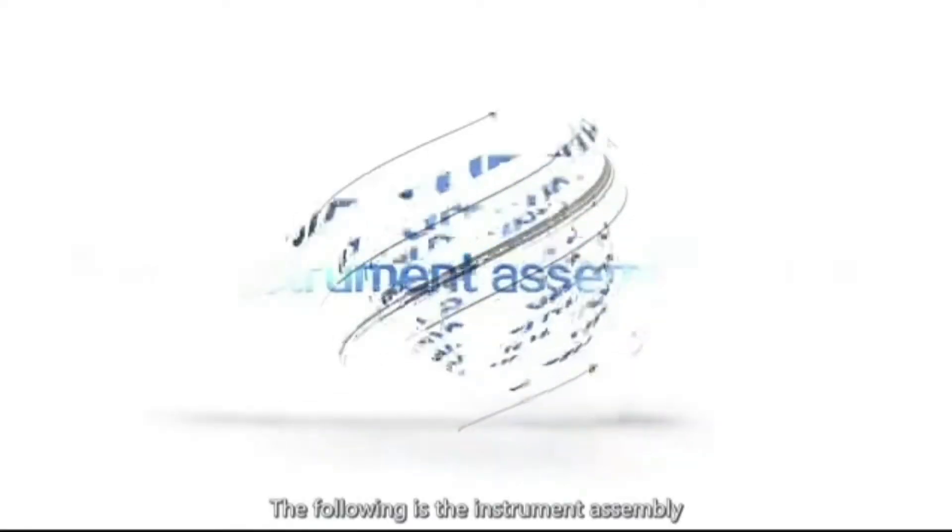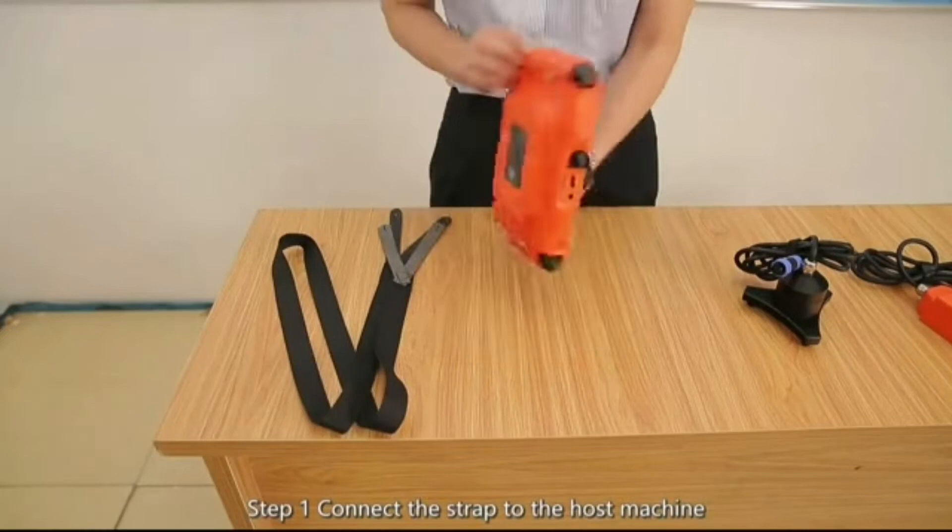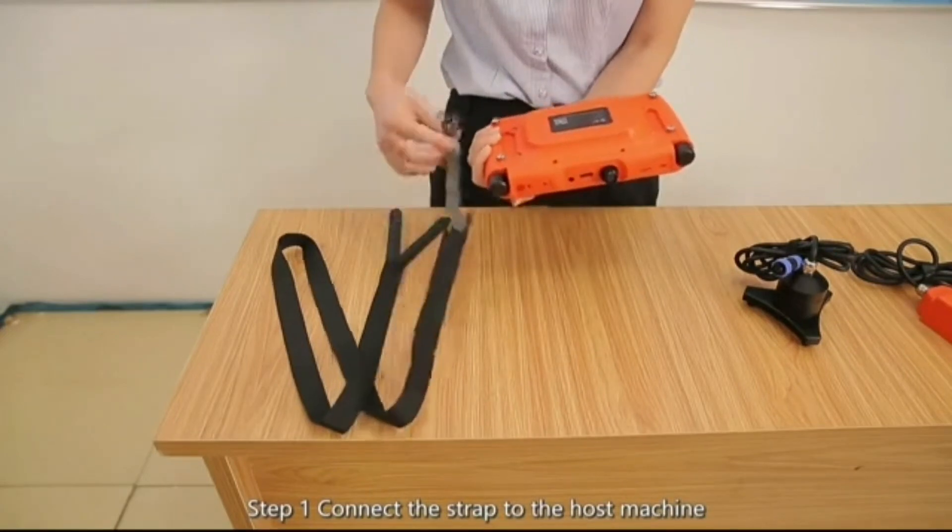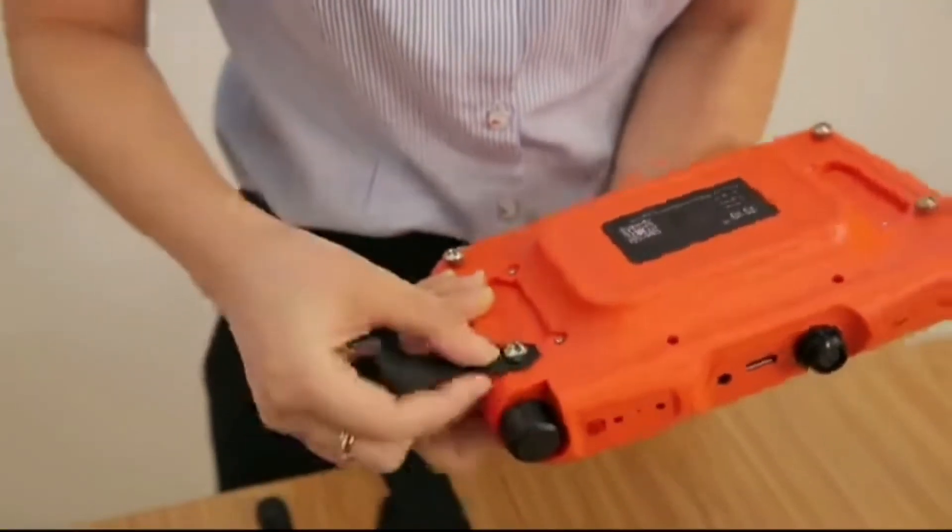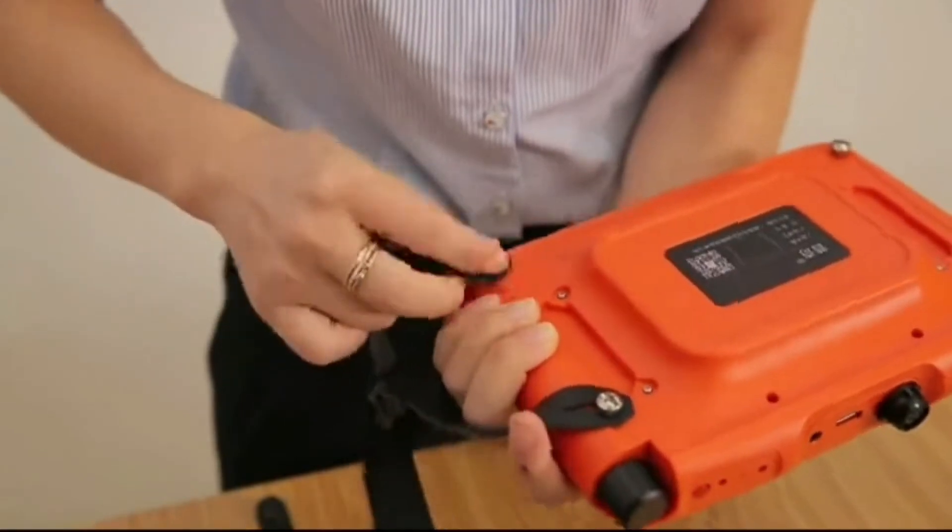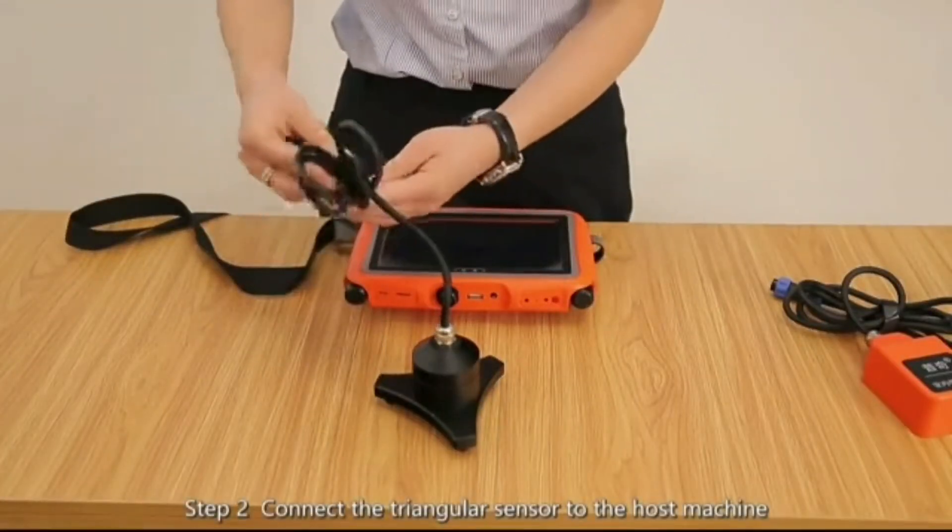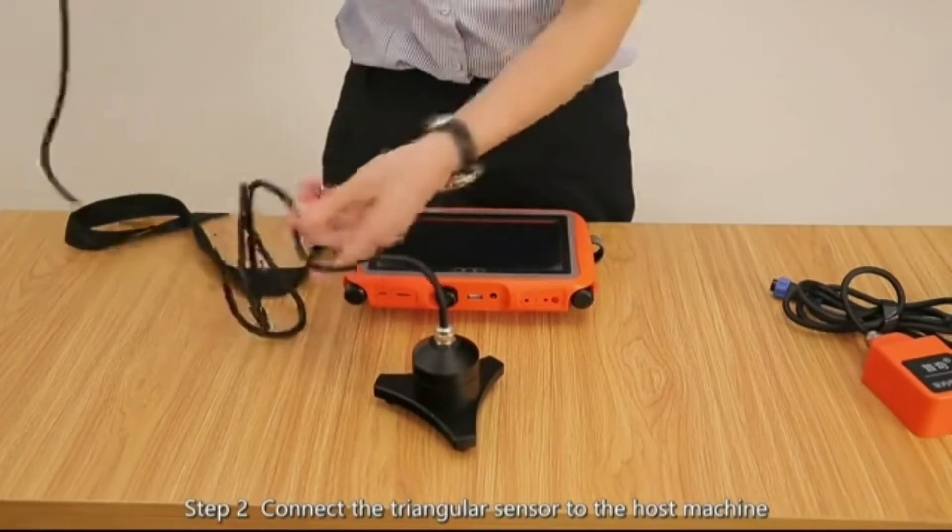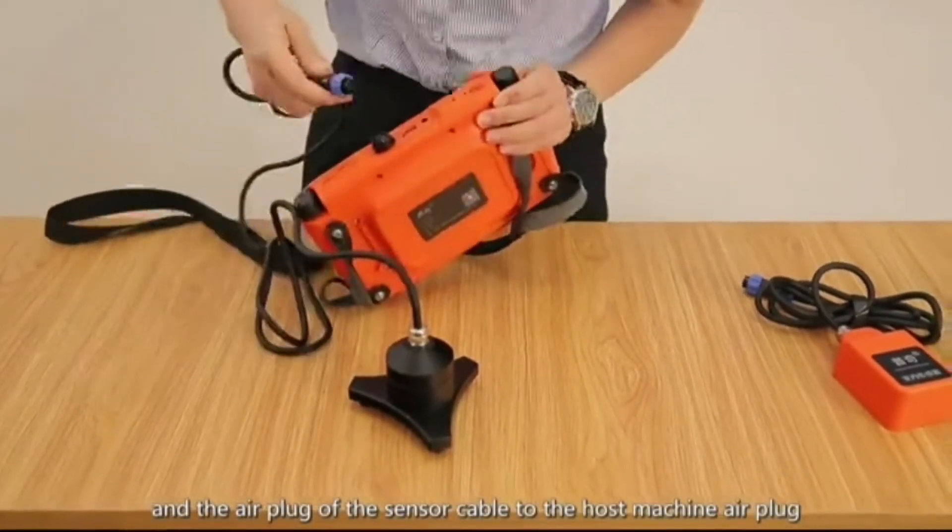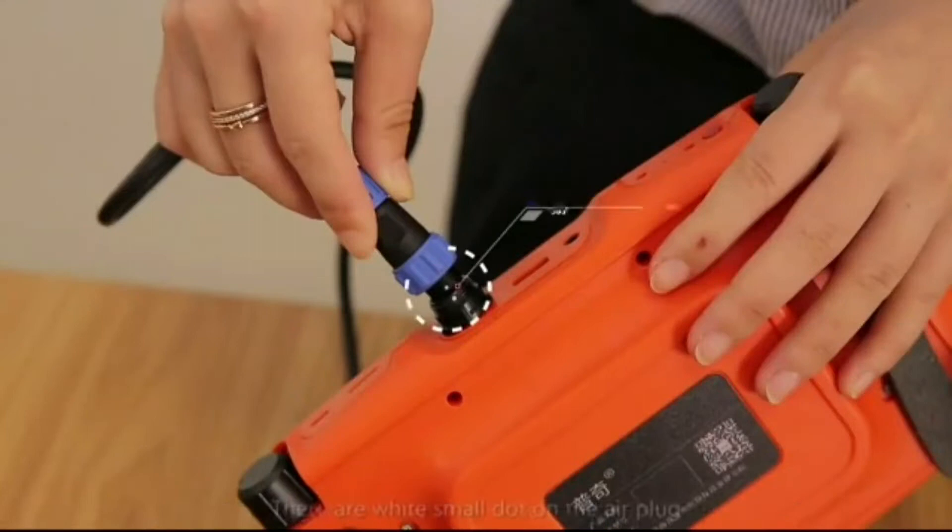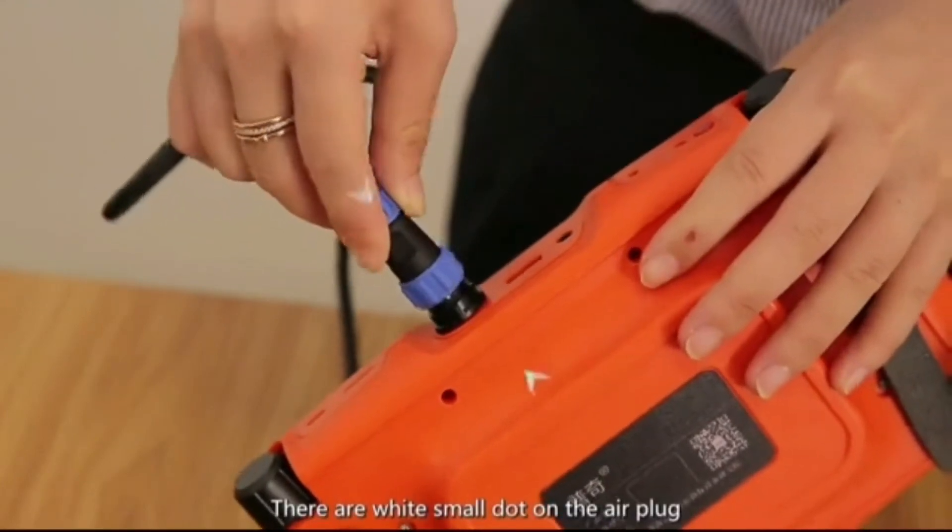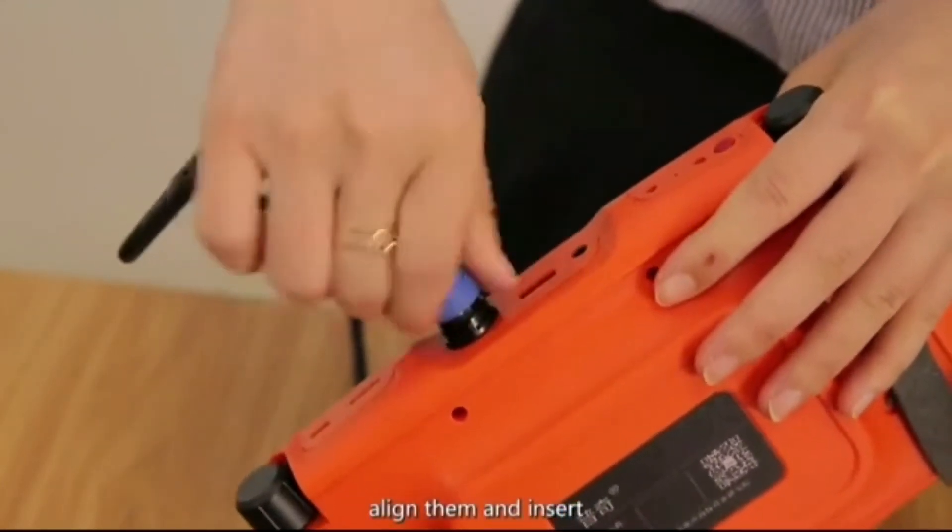The following is the instrument assembly. Step 1: Connect the strap to the host machine. Step 2: Connect the triangular sensor to the host machine and the air plug of the sensor cable to the host machine air plug. There are white small dots on the air plug. Align them and insert.